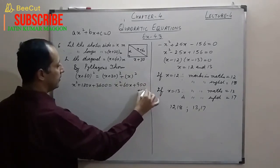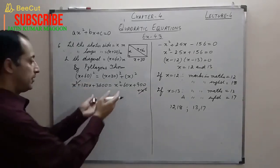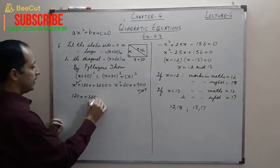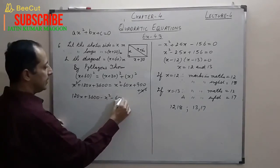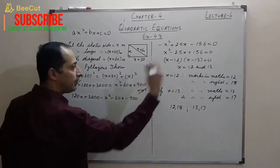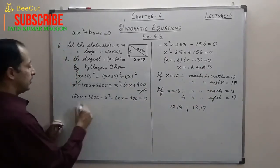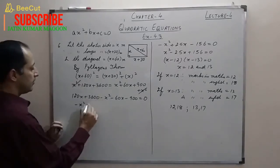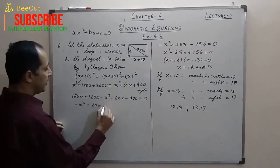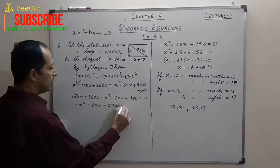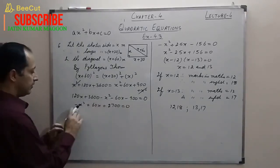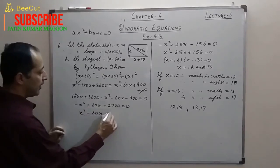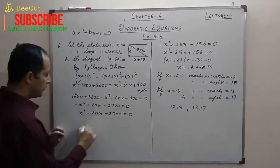The x² cancels on both sides. Shifting all terms to one side: 120x + 3600 − 60x − 900 − x² = 0, which rearranges to −x² + 60x + 2700 = 0. Making the x² coefficient positive by multiplying by −1: x² − 60x − 2700 = 0.